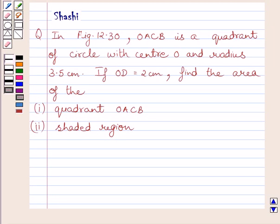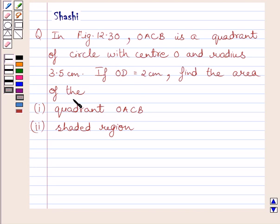Hi and welcome to the session. Let us discuss the following question. In figure 12.30, OACB is a quadrant of a circle with center O and radius 3.5 cm. If OD is equal to 2 cm, find the area of the quadrant OACB and the area of the shaded region.